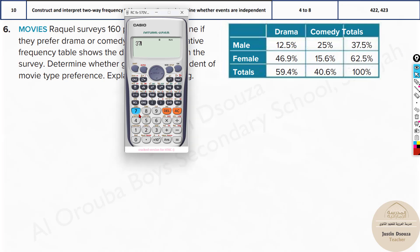Let's take a calculator and see. All you need to do is to find this drama male. Just multiply the totals, that is 37.5 percent, or you can take it as 0.375 multiplied with 59.4 percent. Don't forget the percent. Now the answer is 22.2 percent. It's not matching.